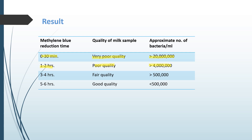Agar methylene blue ka reduction time 3 to 4 hours hai, that means jo milk sample hai woh fair quality of milk hai, aur approximate number of bacteria per ml mein more than 5 lakh hongi. Aur agar methylene blue ka reduction time 5 to 6 hours hai, that means jo milk sample hai woh good quality of milk hai, aur bacteria per ml mein less than 5 lakh hongi.